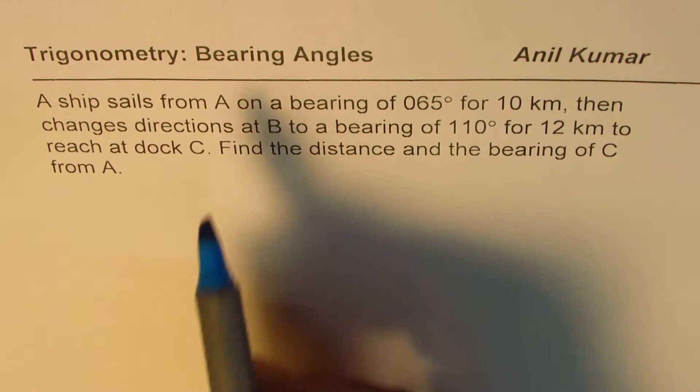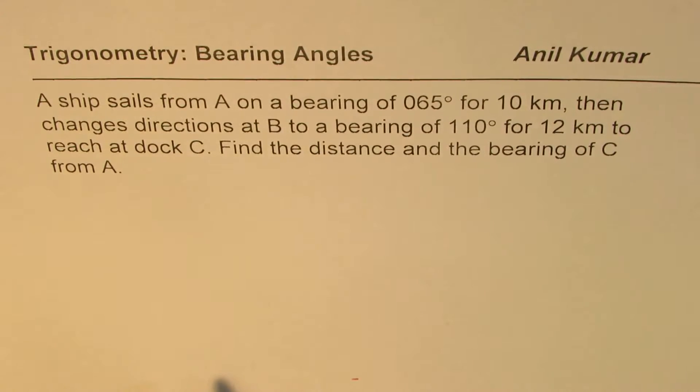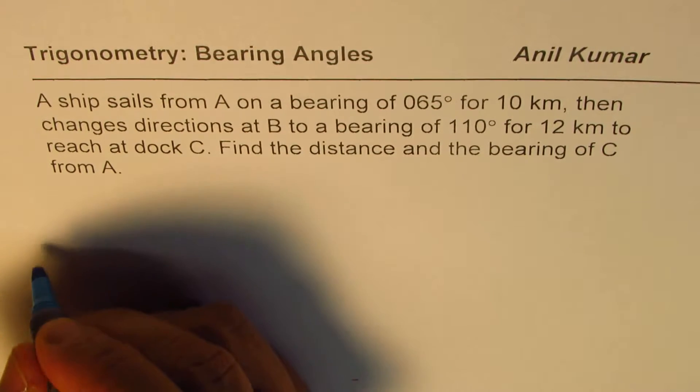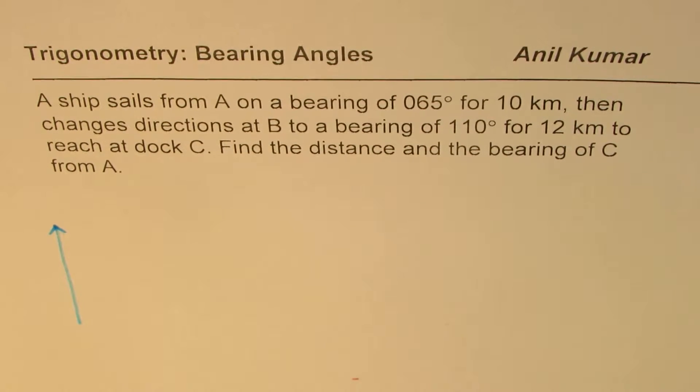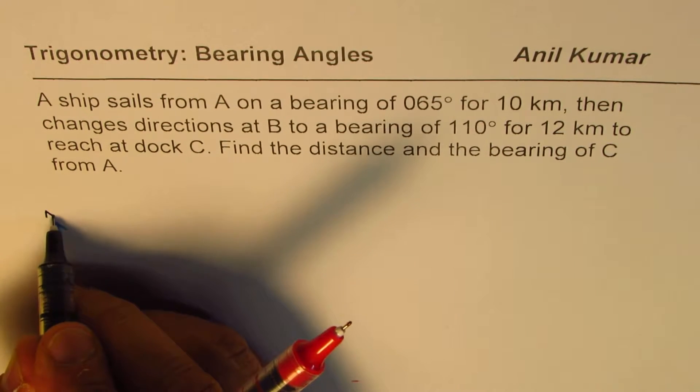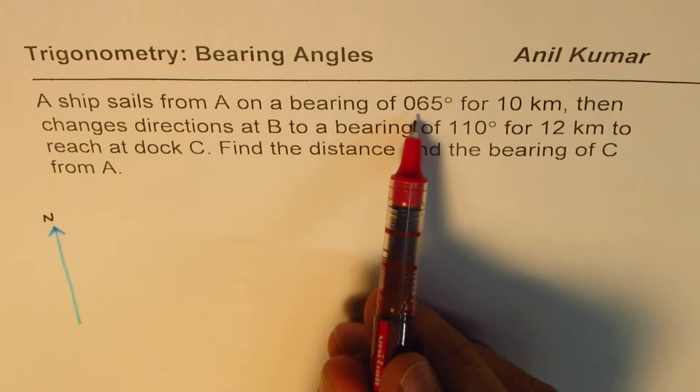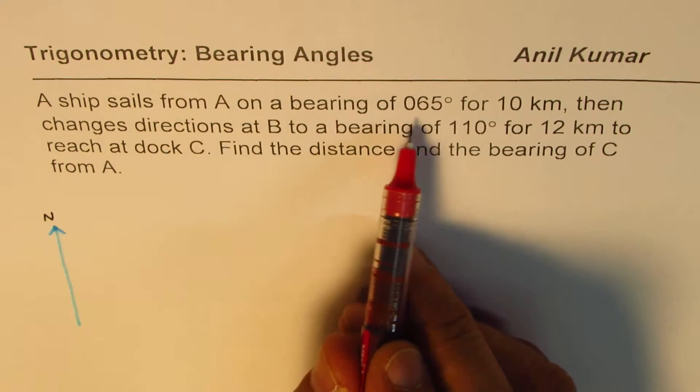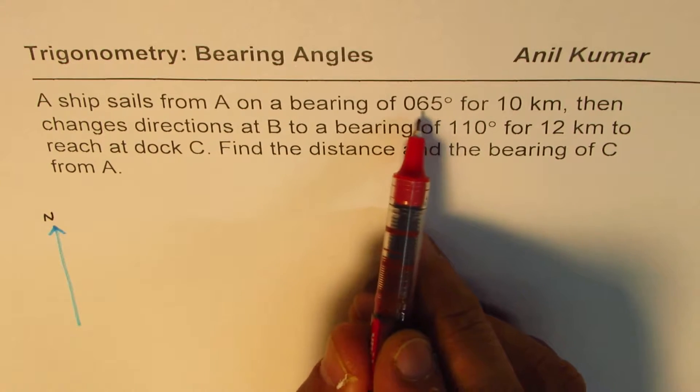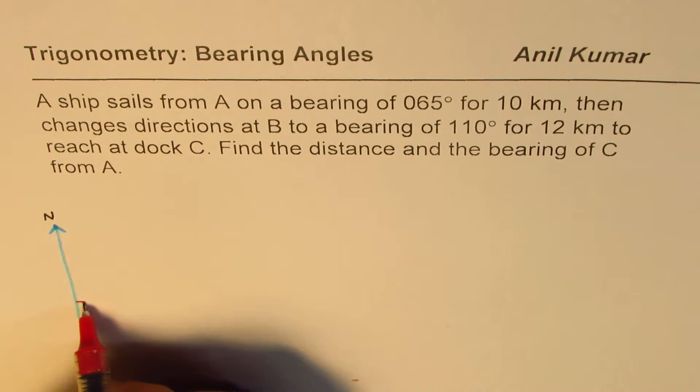Now let's recall what is bearing angle. Bearing angles are angles which are measured clockwise from north. So let us show north in this direction. Let's say that is the north for us. Now when I say that a ship sails from A on a bearing of 65 degrees, 065 degrees - bearing angles are always written in three places.